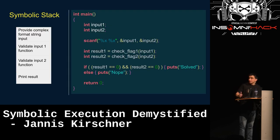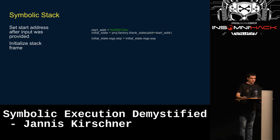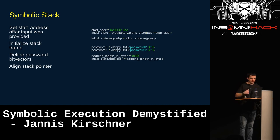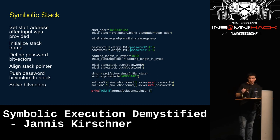Let's look at an example where we don't have one password but two. We set our state right after where we would normally provide values as a user. Then we initialize the stack, define our password bit vectors, align the stack pointer for our new password bit vectors, push them onto the stack — this is really just like coding basic assembly. Finally we run the exploration algorithm and solve the bit vector if a solution has been found.